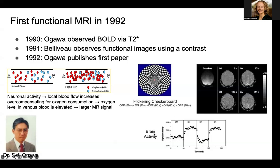Ogawa did this experiment where he flickered a checkerboard — off for 60 seconds and on for 60 and off for 60. If you looked at the brain activity in the visual cortex, in the back of the brain, and here's a time course of the BOLD signal over time, you can see in the on state where the flickering checkerboard was on and the visual stimuli was input, you see a much higher level of BOLD signal, which indicates higher levels of neural activity in the on state than when the checkerboard was turned off.